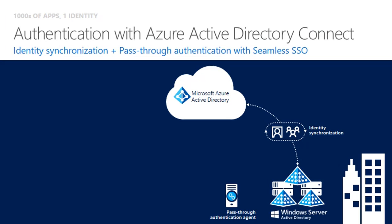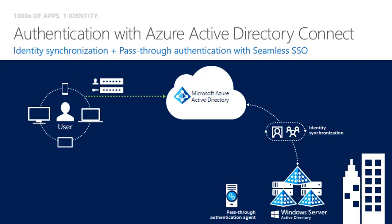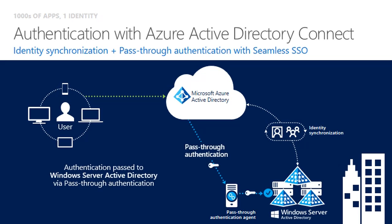The new sign-in method that we've added to Azure AD Connect we call Azure AD Pass-through Authentication. We've added a lightweight connector that is installed in your on-premises environment. This connector allows your organisation to validate the username and password against your on-prem AD. The user enters their username and password into the Azure AD login screen and then it is passed through to the connector on-premises and validated against your on-prem AD without requiring the password to be stored in Azure AD in any form.